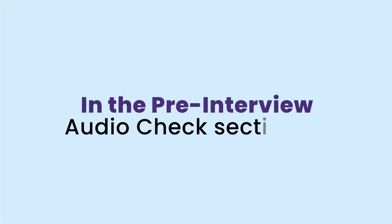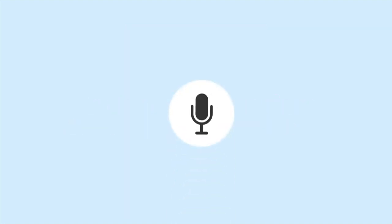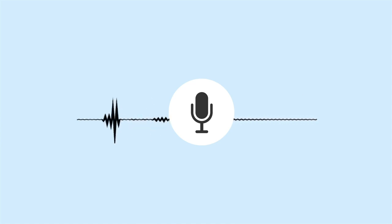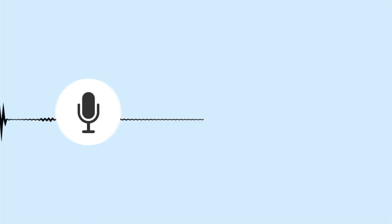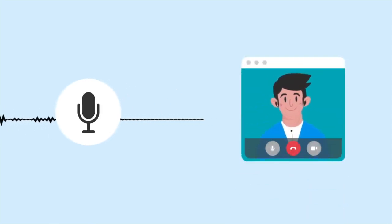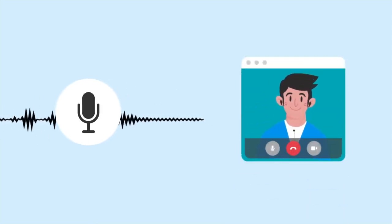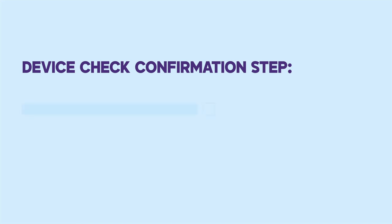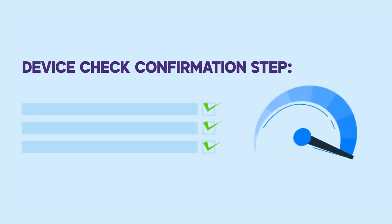Step 6: in the pre-interview audio check section, our cutting-edge technology confirms clear audio and checks for any necessary browser permissions for a smooth interview experience. In the pre-interview video check section, rest assured that your camera is working properly and all necessary permissions have been granted. In the device check confirmation step, AI guarantees that your device meets all specifications and your internet speed is up to par for optimal performance during the interview.